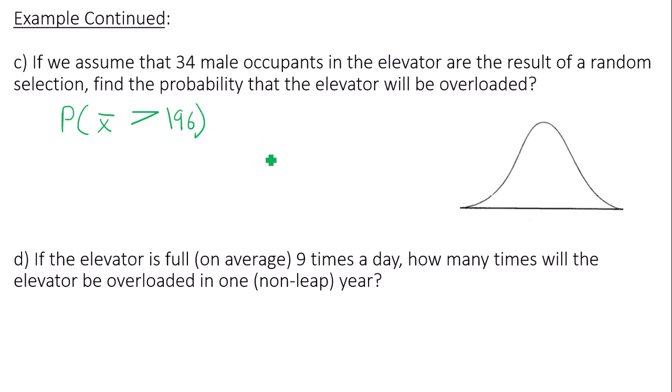The averages of these averages, the mean of these sample means follows a normal distribution. So I call this my sampling distribution. It's a distribution that talks about the sample means. So all of my collections of 34 males, I'm interested in the probability that these collections of 34 males will be greater than 196.